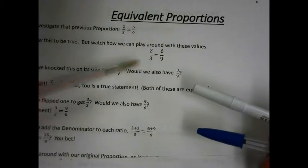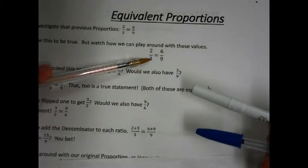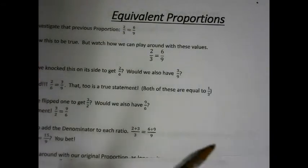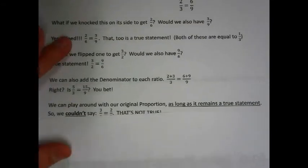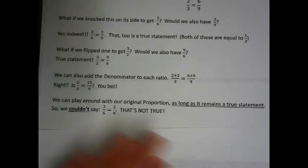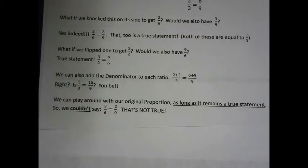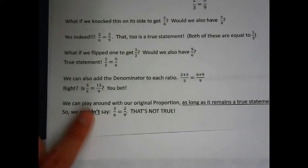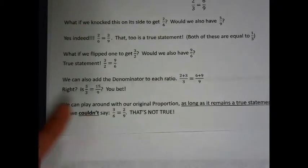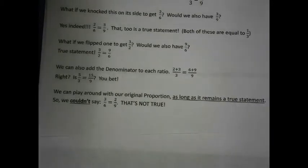You can play around with your original proportion as long as it remains a true statement. For example, can we take our original proportion and say that 6 over 3 would equal 9 over 2? The answer is no. We couldn't say that 3 sixths is 2 ninths — that's not true. We can play around with proportions as long as we still have a true statement. That's a huge thing to understand.